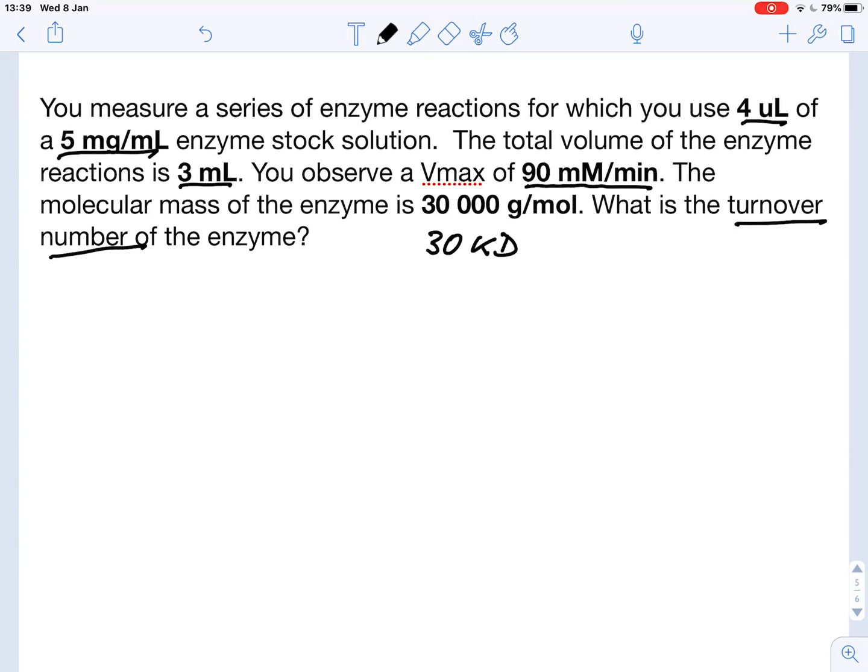So let's remind ourselves how we calculate the turnover number of an enzyme. We know that Vmax is defined as the total enzyme concentration times the rate constant from the enzyme-substrate complex to the product. And usually this is known as Kcat, the catalytic constant. And this is actually what we are looking for. This is our turnover number.